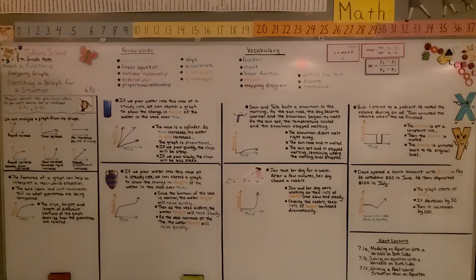As you're sketching a graph for a situation, look at the words. Look for clue words that tell you if the graph is going to have a slope that increases, decreases, or stays constant. Have a great day and join me for Module 7. Bye!